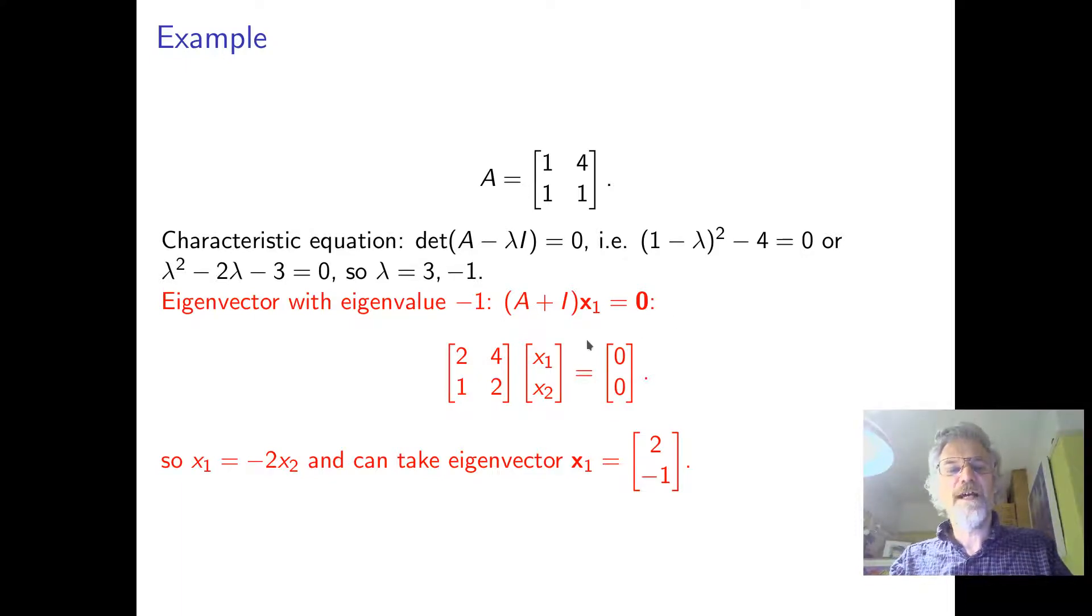To do that we put in A minus lambda I, so when it's minus one it's A plus I, we add one to the diagonal, we solve this for x_1, x_2, we will always get an unknown parameter t which we can choose as anything we like to get a non-zero vector. Looking at this it's really just x_1 is minus 2x_2 written down twice, so the solutions are [2, -1].